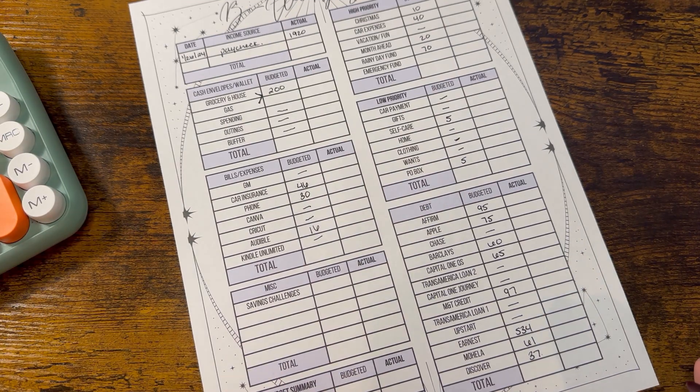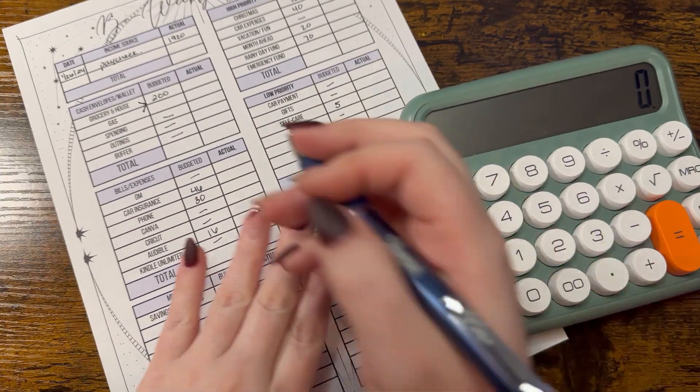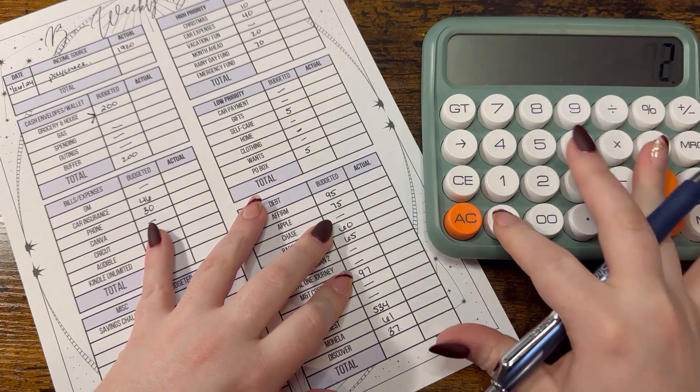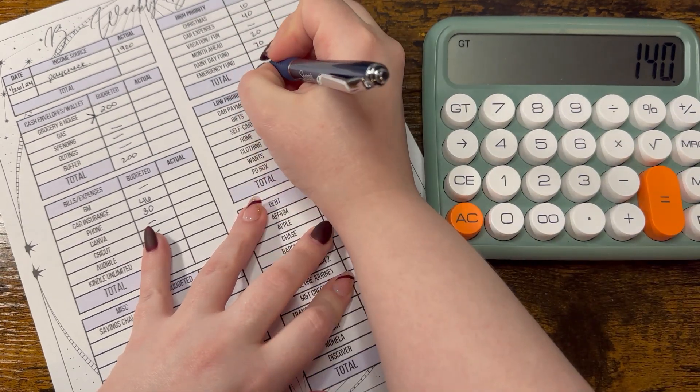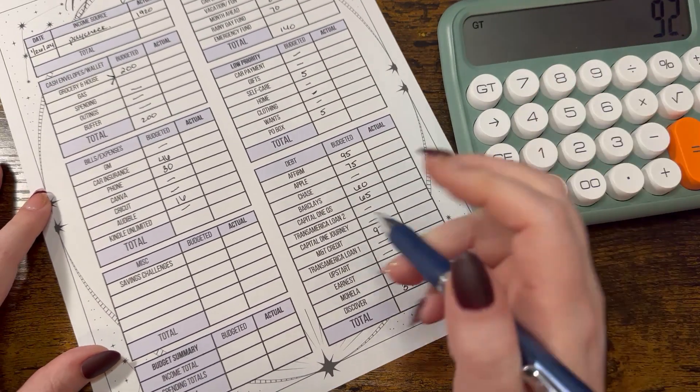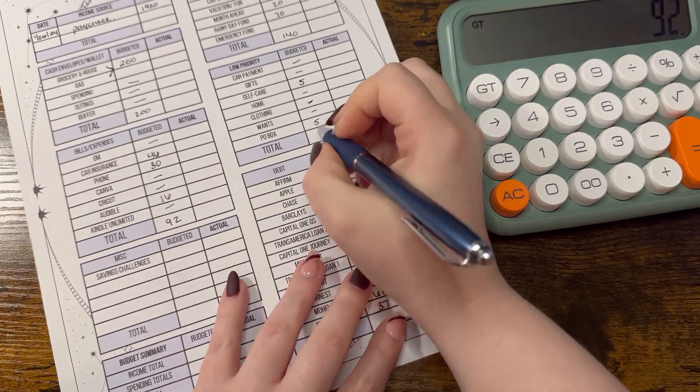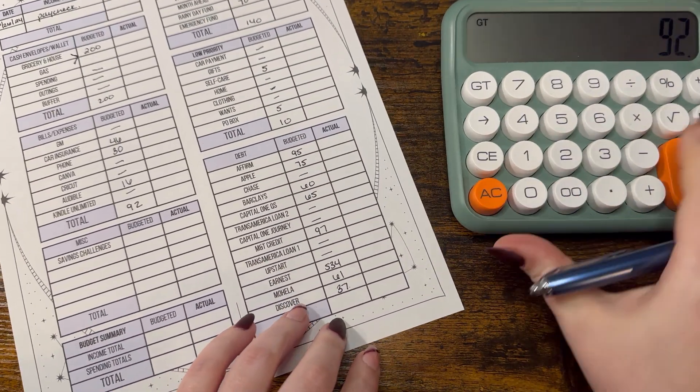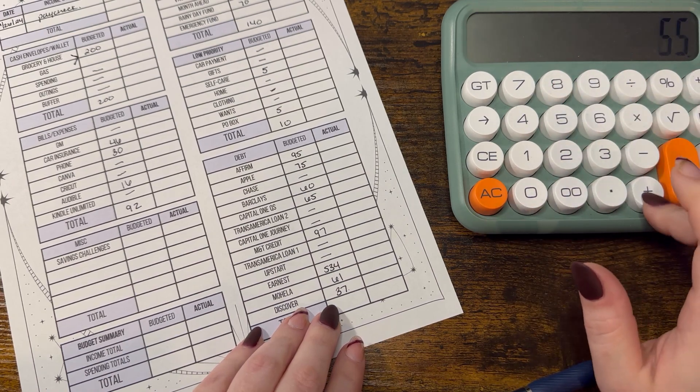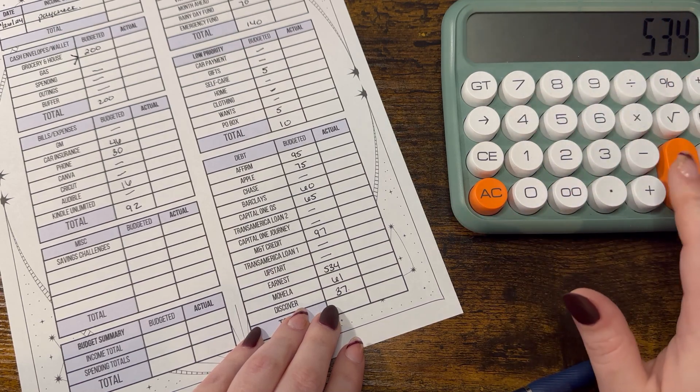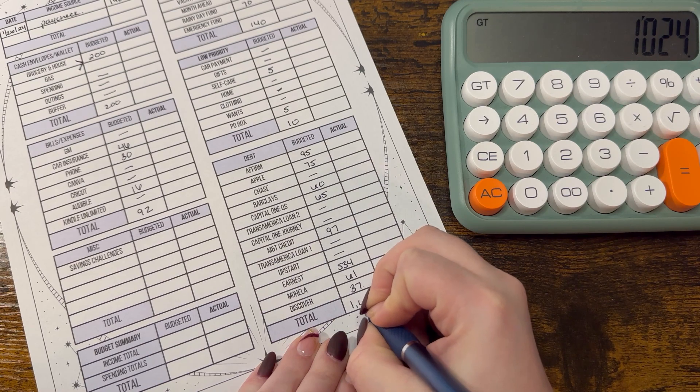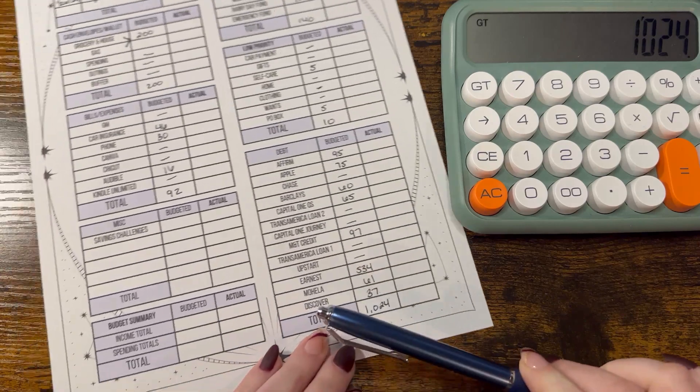So I've got $1,920. So far this is $200. $90 plus $20 plus $40 plus $10 equals $140. $46 plus $30 plus $16, this leaves us at $90. This leaves us at $10. Our debt payments, $13 plus $10, that's $10. This leaves us at $1,024. So now we're going to subtract all of these.